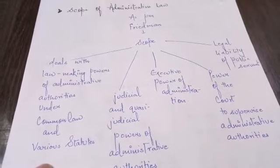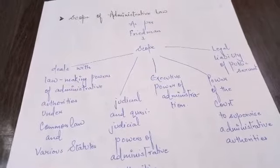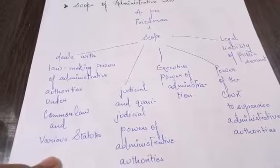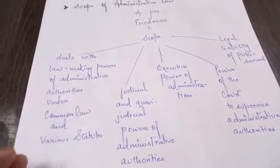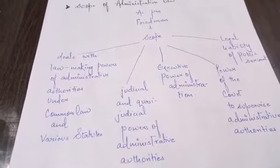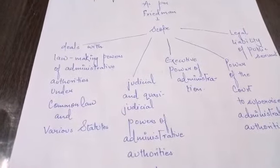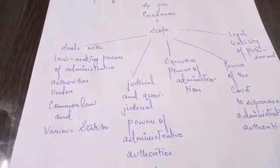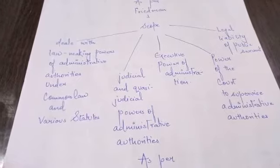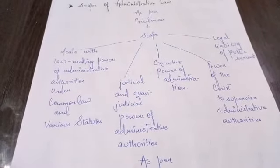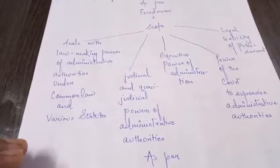Now let's talk about the scope of administrative law. Here we have two authorities: Freedmen and MC Jain. As per Freedmen, the scope of administrative law covers: first, law-making powers of administrative authorities under common law and various statutes; second, judicial and quasi-judicial powers of administrative authority; third, it checks executive power of administration; fourth, it checks the power of the court to supervise administrative authorities; and fifth, it imposes legal liability and addresses the legal liability of public servants.